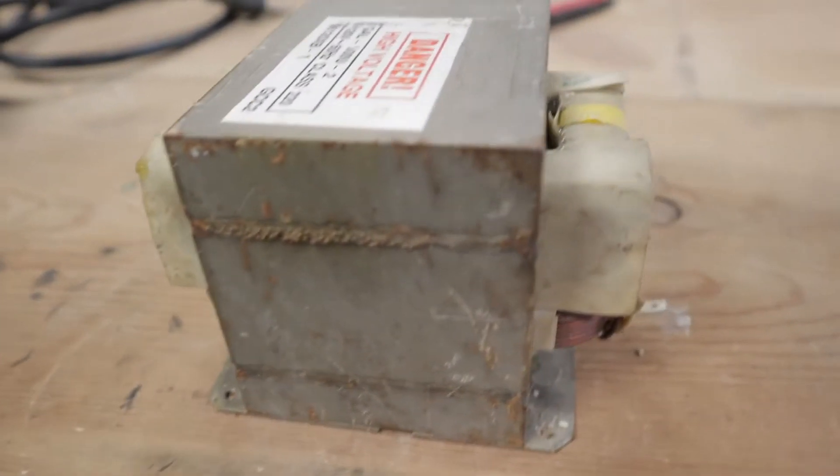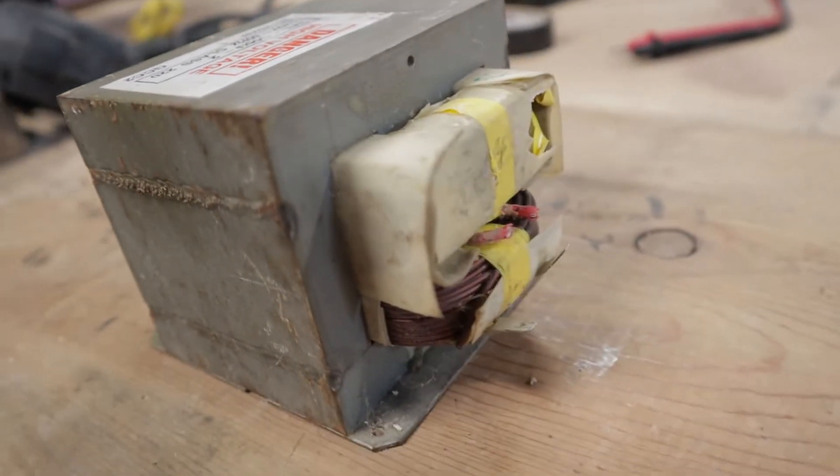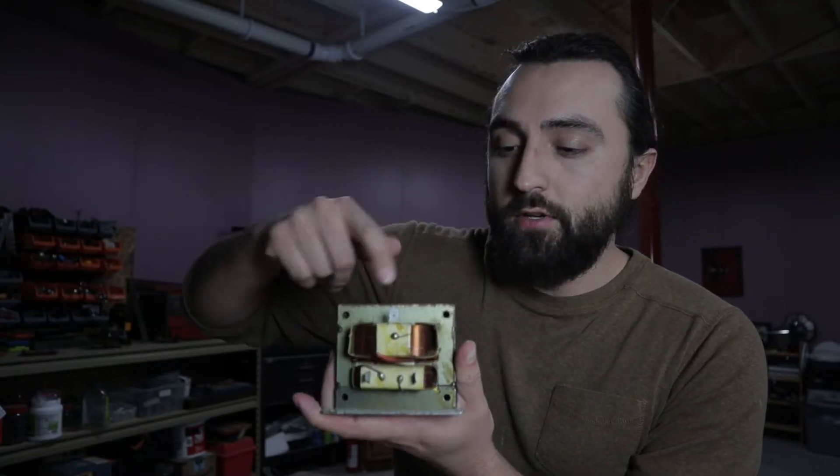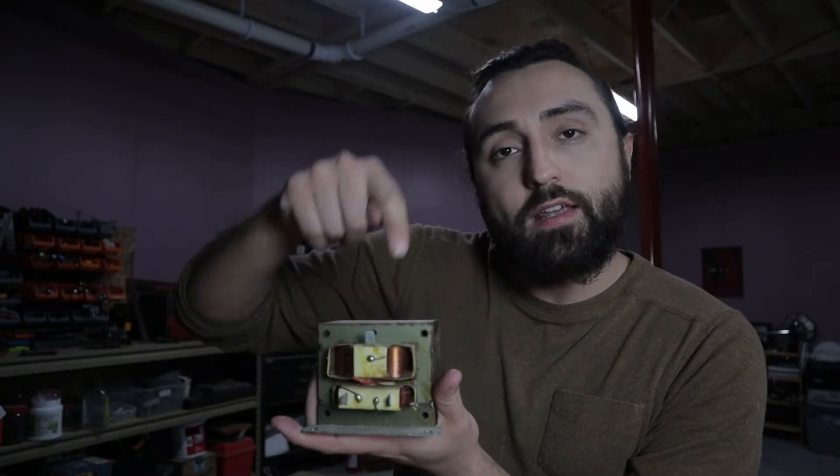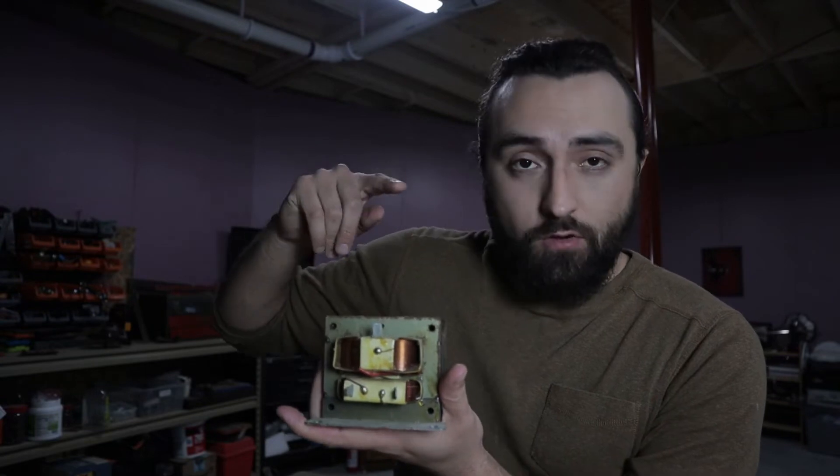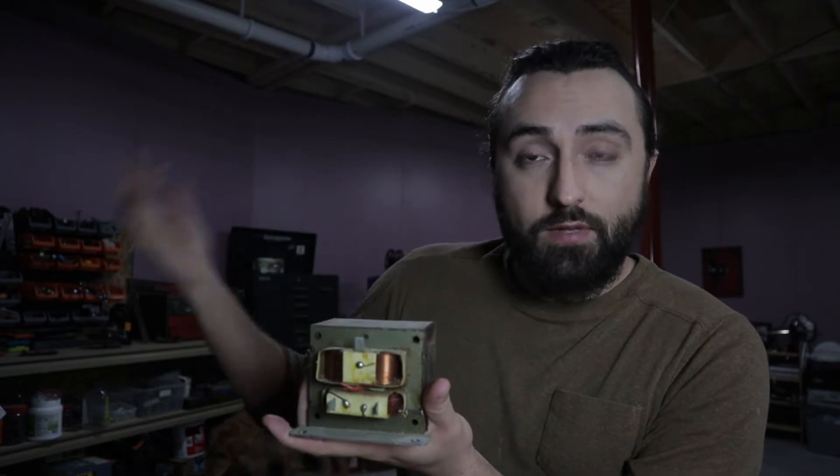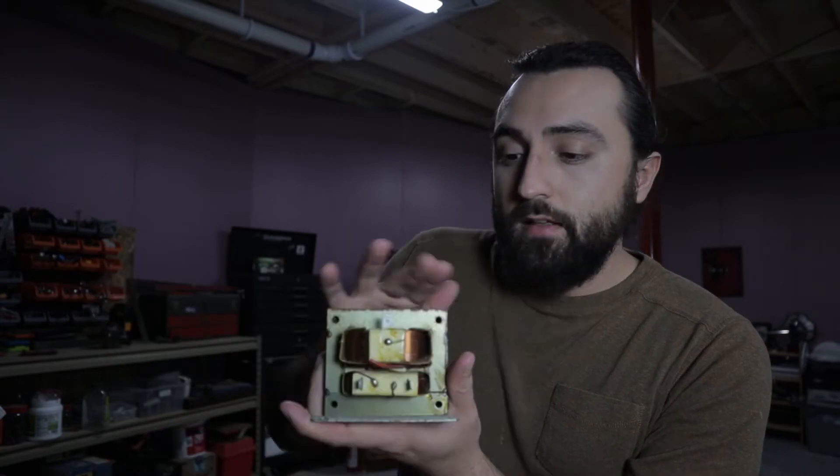So this is a transformer out of a microwave oven. And what it does in a microwave is it takes the power out of your wall, runs through this coil, which creates a magnetic field, which then gets picked up by the secondary coil, which transforms the voltage into a very high voltage, which can be used to create things that make your burritos nice and warm.